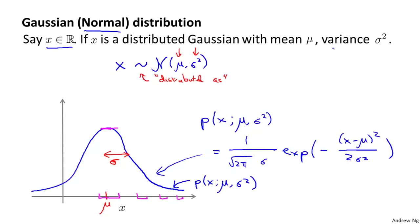Sometimes it's easier to think in terms of sigma squared, which is called the variance. Other times it's easier to think in terms of sigma, which is called the standard deviation — it specifies the width of this Gaussian probability density. The square of sigma, sigma squared, is the variance.